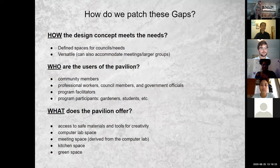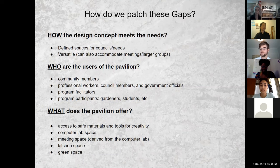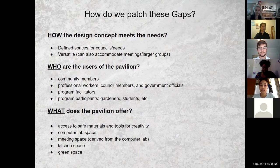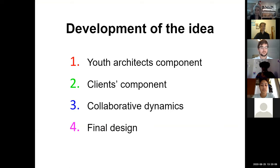How do we patch these gaps? We answered based on three questions: How does the design meet needs — finding versatile spaces for councils accommodating meetings and larger groups? Who are the users — community members, professional workers, council members, government officials, program facilitators, participants, gardeners, and students? What does the pavilion offer — access to safe materials for creativity, a computer lab, meeting space, a prep kitchen, and green space for gardening. The design idea emerged from the youth architects' component, the clients' component, and collaborative dynamics.